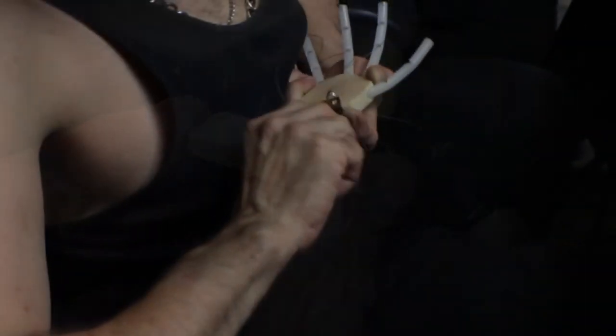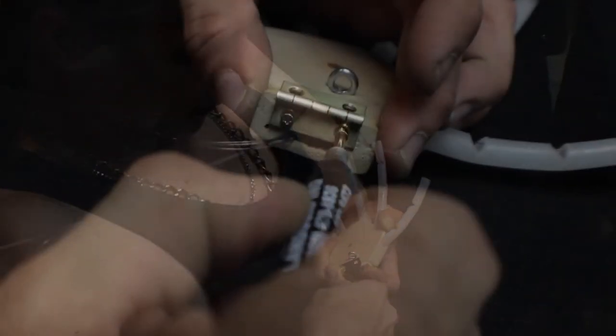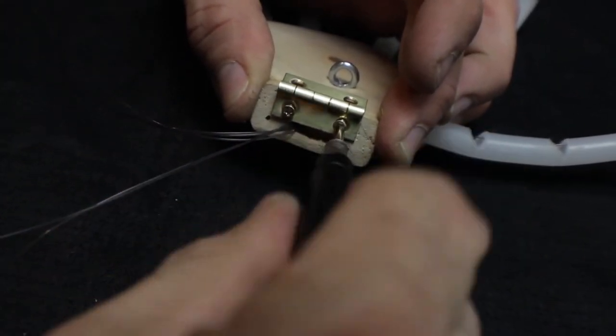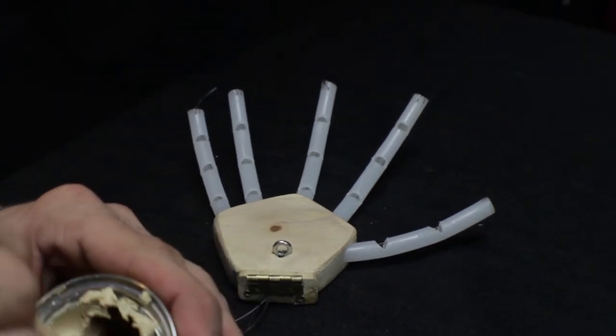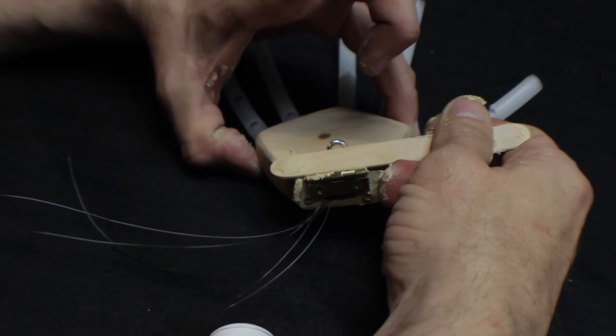Secure the end cap in place with the extra screws that came with the metal hinge. Attach only one side of the hinge to the palm. Use wood filler or wood putty to fill in the seams along the palm and wrist end cap. Allow to dry completely and sand smooth.